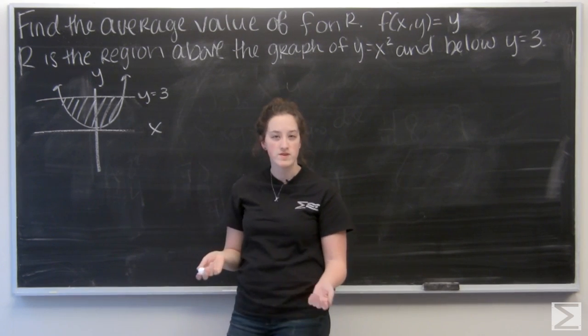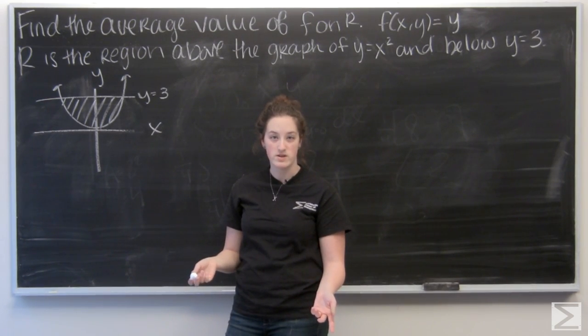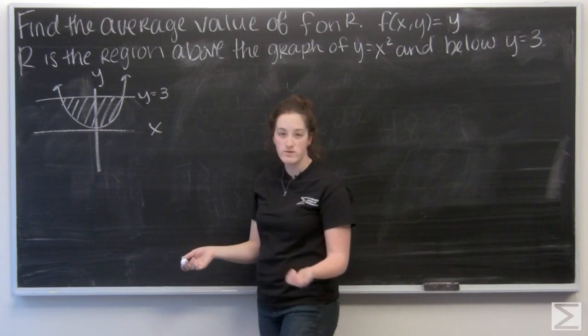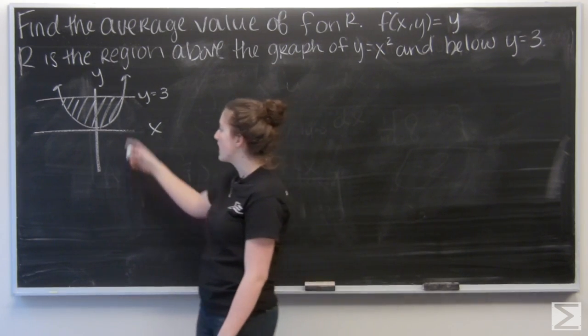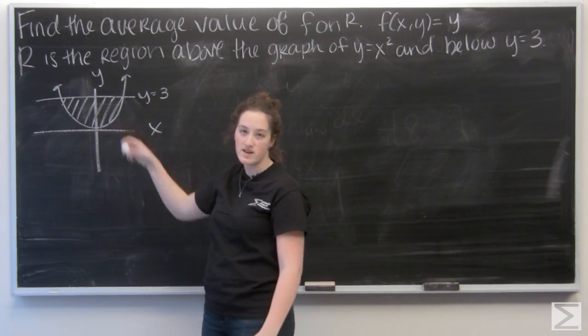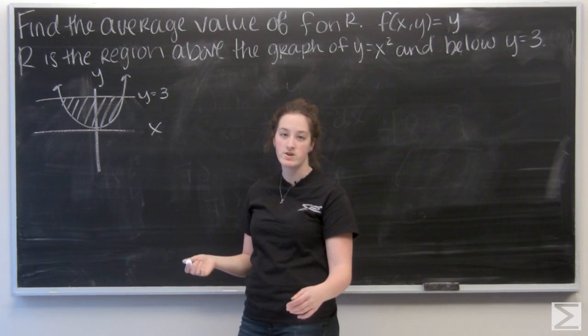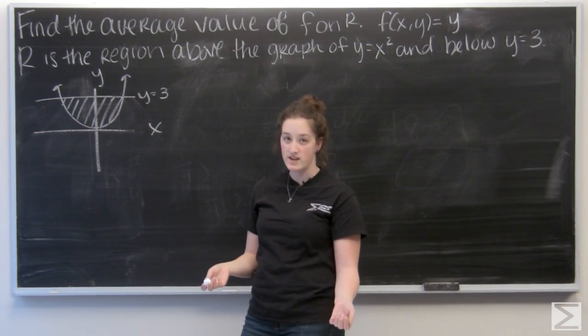For average value, the first thing I want to do is find the area of my region. So here I'm going to integrate with respect to x. I'm going to have the integral of 3 minus x squared, top function minus bottom function. But now I need to find my x limits.